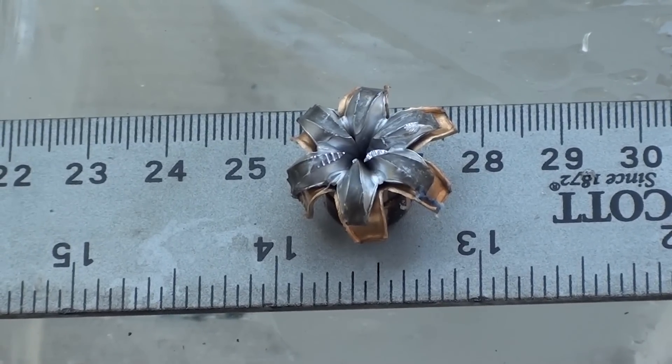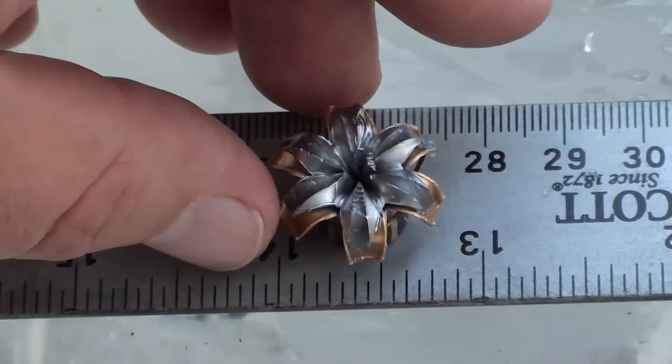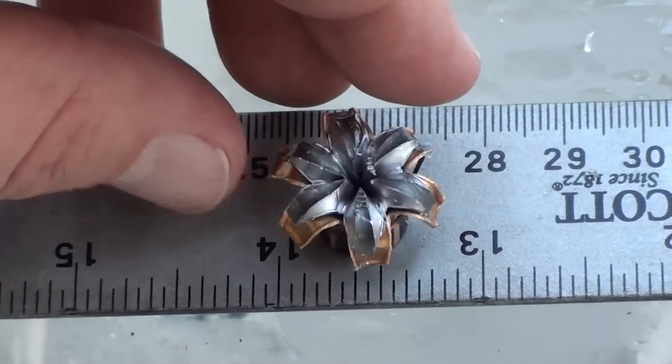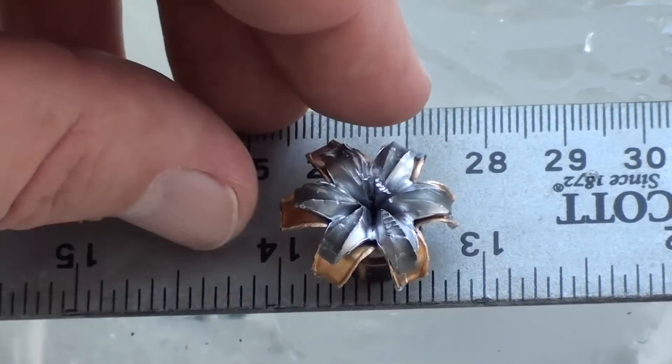Okay guys, got that 230 grain HST up out of there. You can see that flowered back nice. I mean that thing, that's got some wicked ass expansion to it.